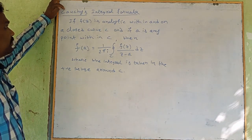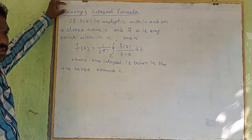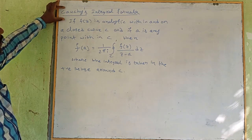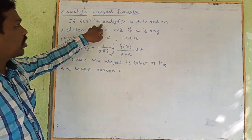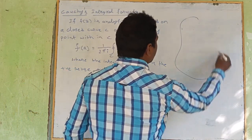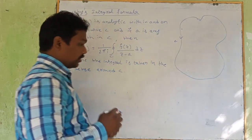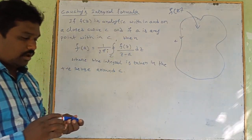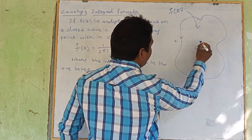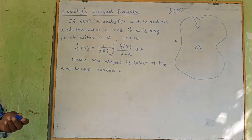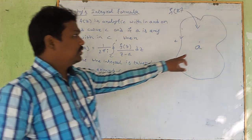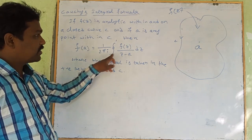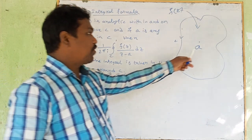Next, Cauchy's integral formula. The statement: if F of z is analytic within and on a closed curve C, and if 'a' is any point within C, then F of a is equal to 1 over 2πi times the integral over C of F(z) divided by (z minus a) dz.